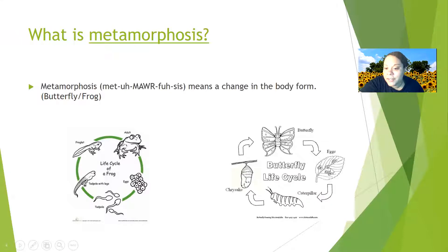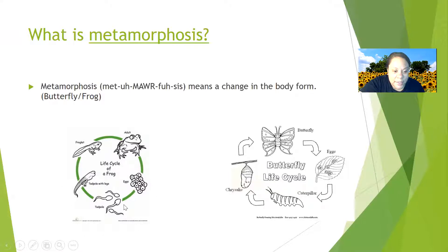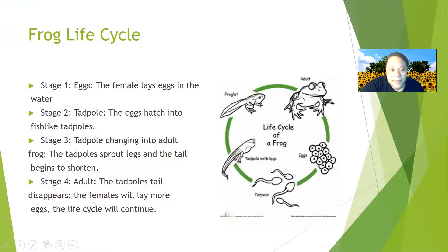Then a beautiful butterfly comes out of the chrysalis, and that butterfly does the same thing again — that's the life cycle, or metamorphosis, showing how the butterfly's body changed. With frogs, their body also changed: they went from eggs to tadpole, to tadpole with legs, to a froglet, to an adult frog. That is the frog's life cycle and their metamorphosis.